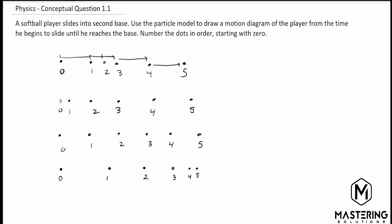This next one down here, from zero to one it's a short distance, and then larger and larger as we go along. So this is like they're starting out at a base and then picking up speed as they're running to the other base.